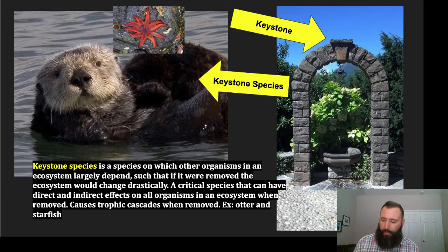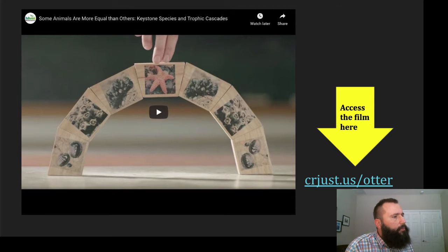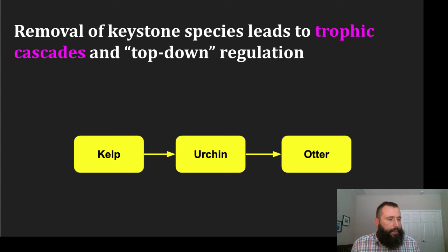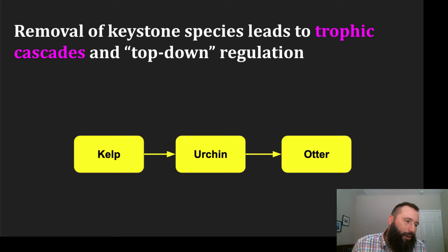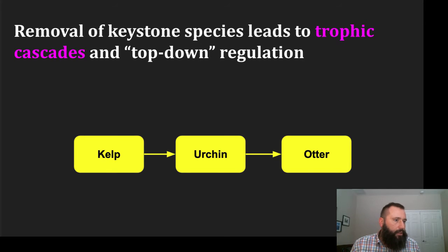An example of a keystone species would be the otter and the starfish. Take a look at this food chain: the kelp are the producers, the urchins are the primary consumers, and the otters are the secondary consumers. Those arrows represent the flow of energy from one population to the next. The removal of a keystone species will lead to trophic cascades and top-down regulation.